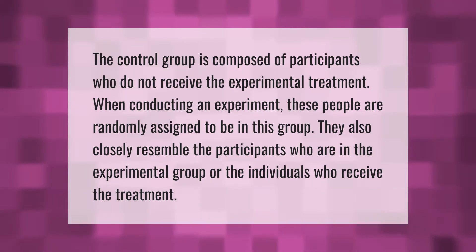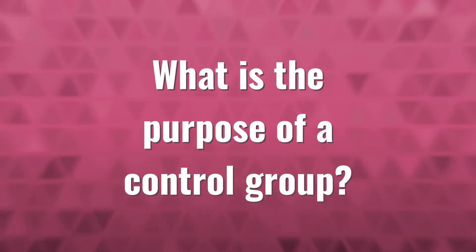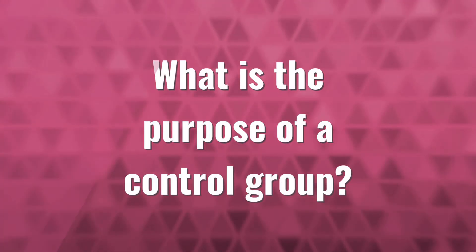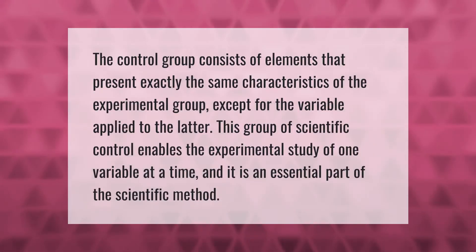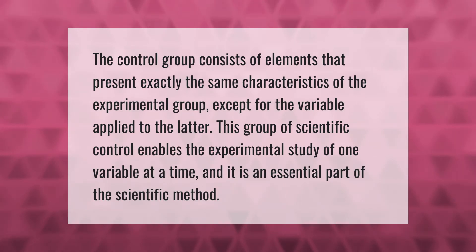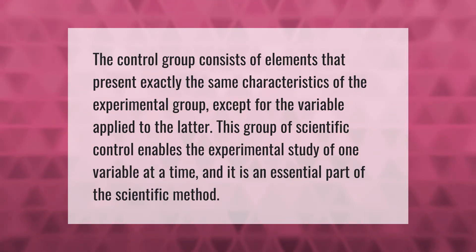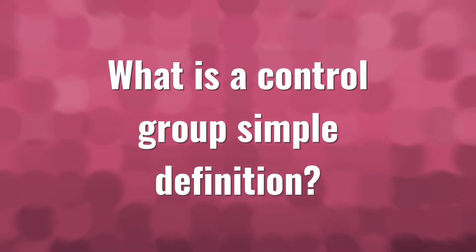The control group consists of elements that present exactly the same characteristics of the experimental group, except for the variable applied to the latter. This group of scientific control enables the experimental study of one variable at a time, and it is an essential part of the scientific method.